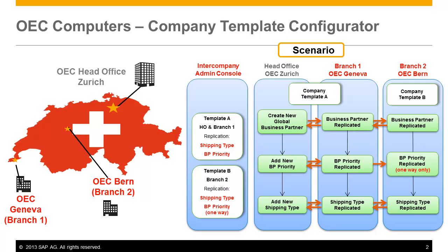Our company, OEC Computers, have branches all over Switzerland and these branches are localised Business One Company databases to meet local business practices. For this scenario we have three Swiss localisation companies: Head Office is based in Zurich, Branch 1 is based in Geneva, and Branch 2 is based in Bern. We are going to configure data replication for two business objects: Business Partner Priority and Shipping Type for each branch.